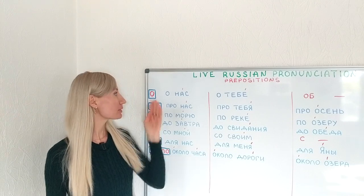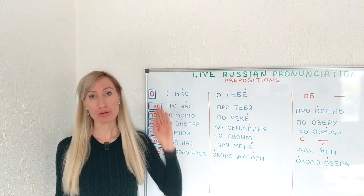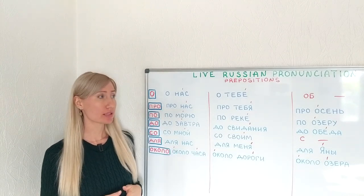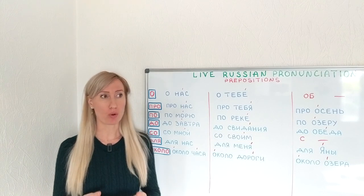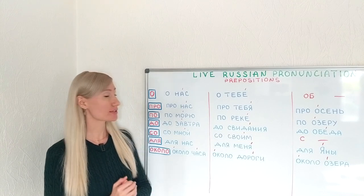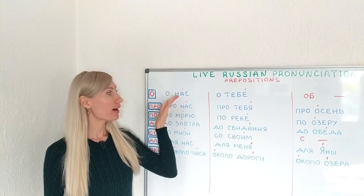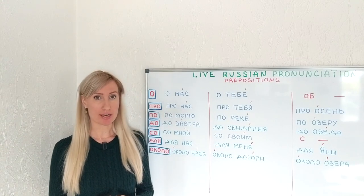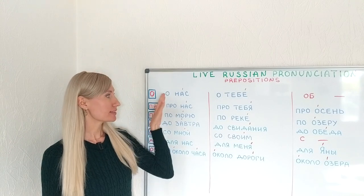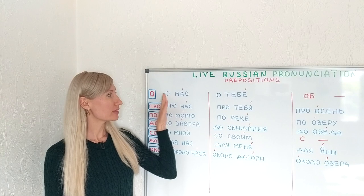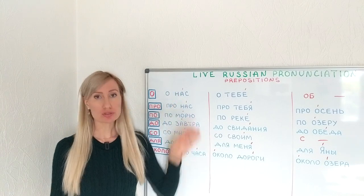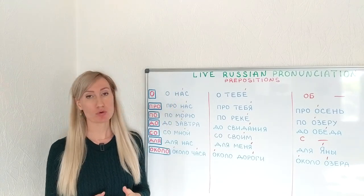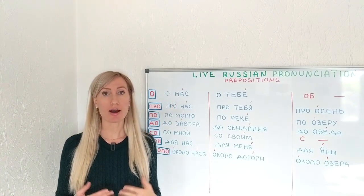We are starting with the preposition О, which means 'about,' and interestingly it never sounds like О. Let's look at the examples. О НАС — about us. In this case the preposition О is close to the stressed syllable. That's why it sounds more like А — О НАС.